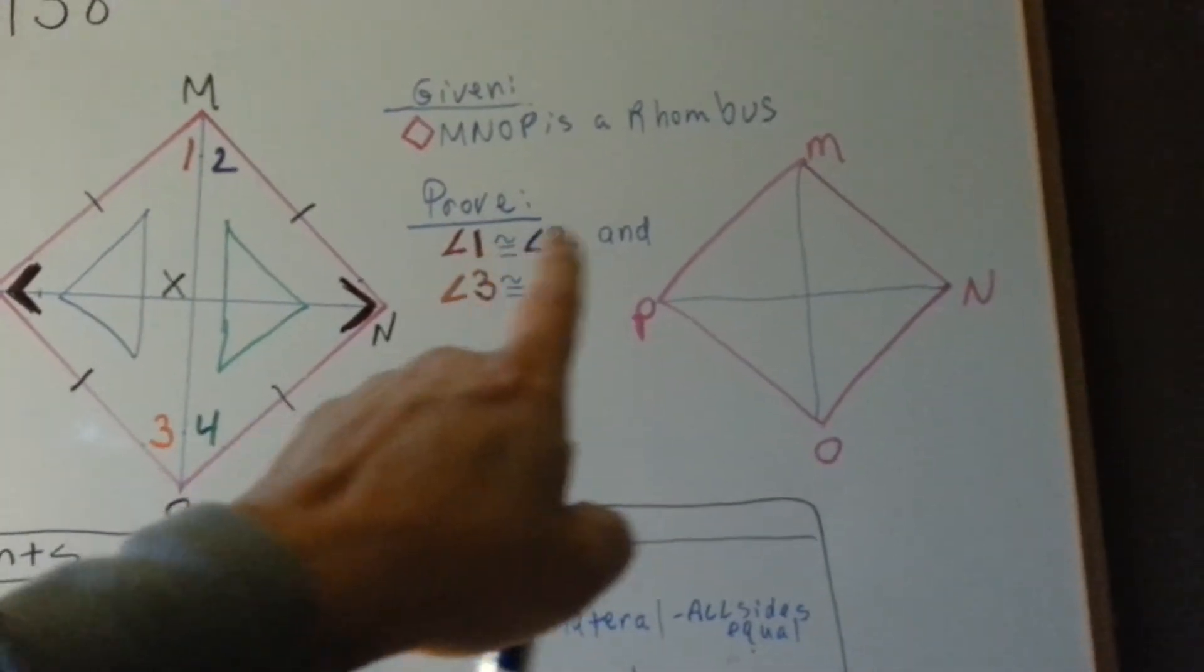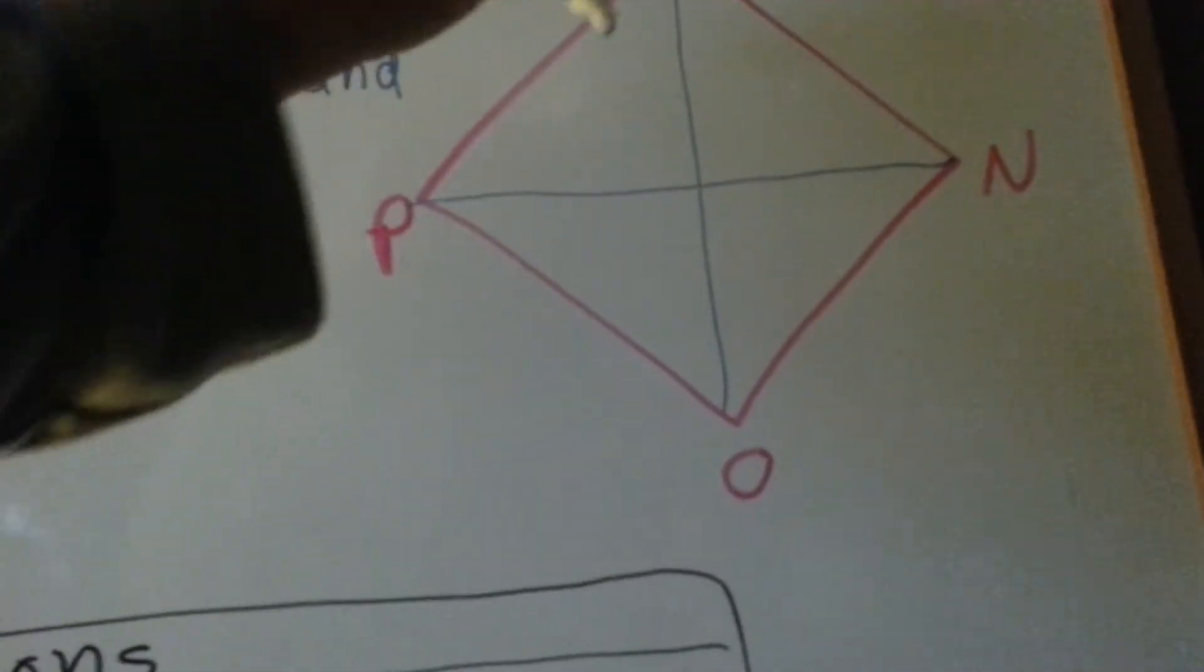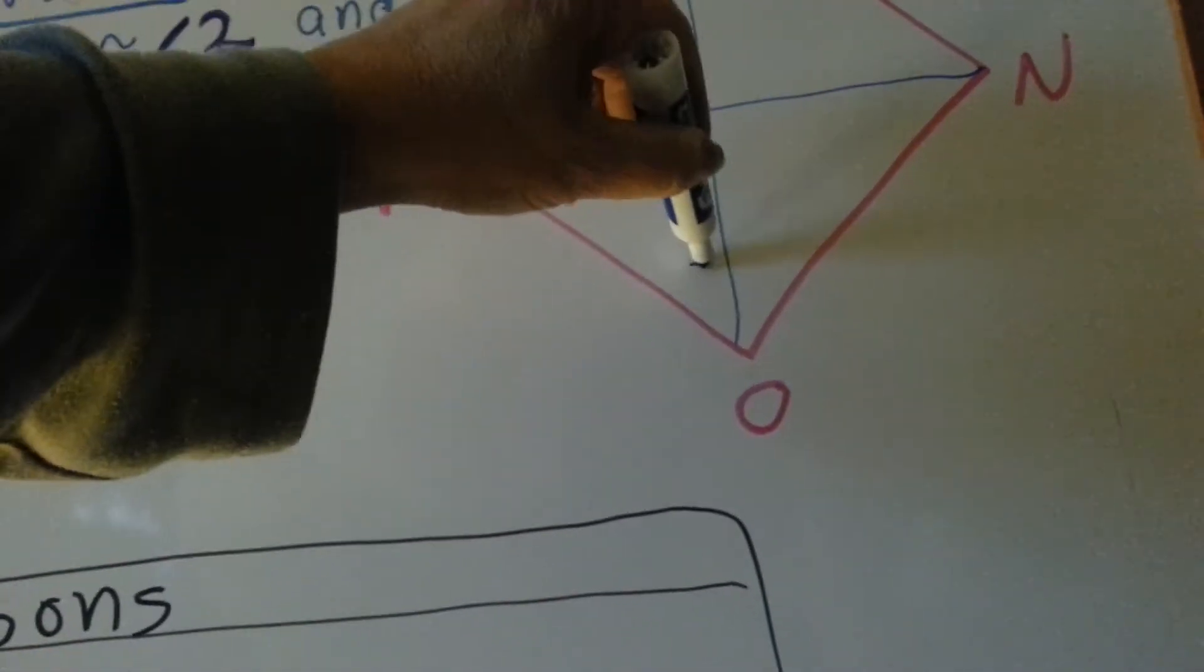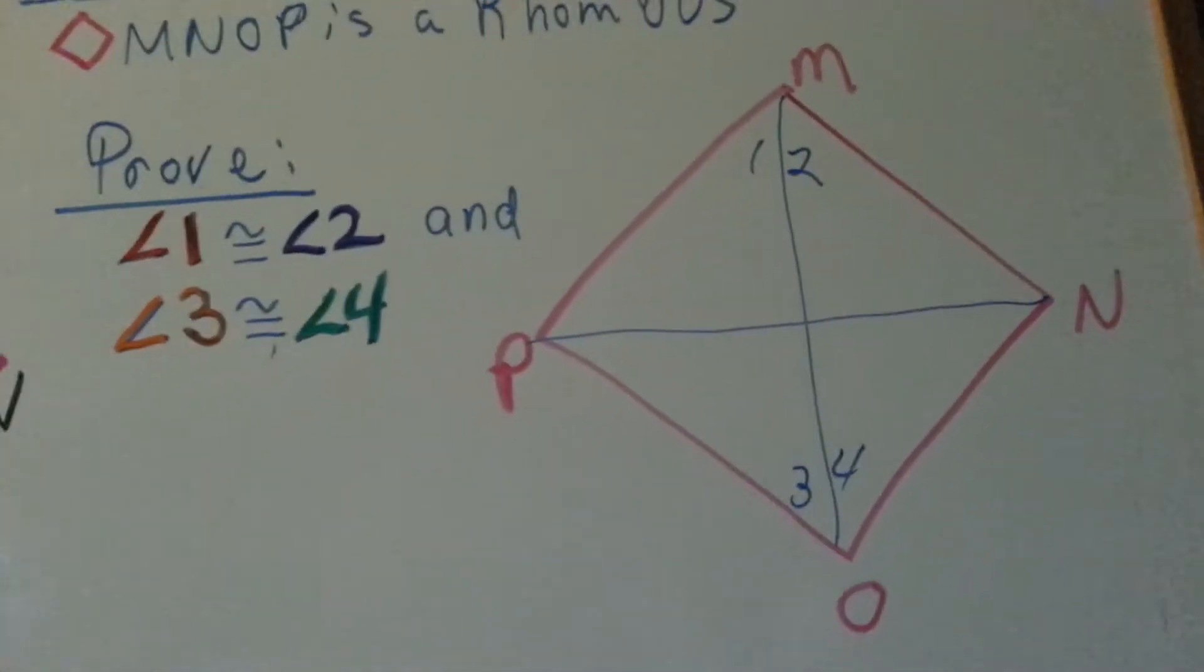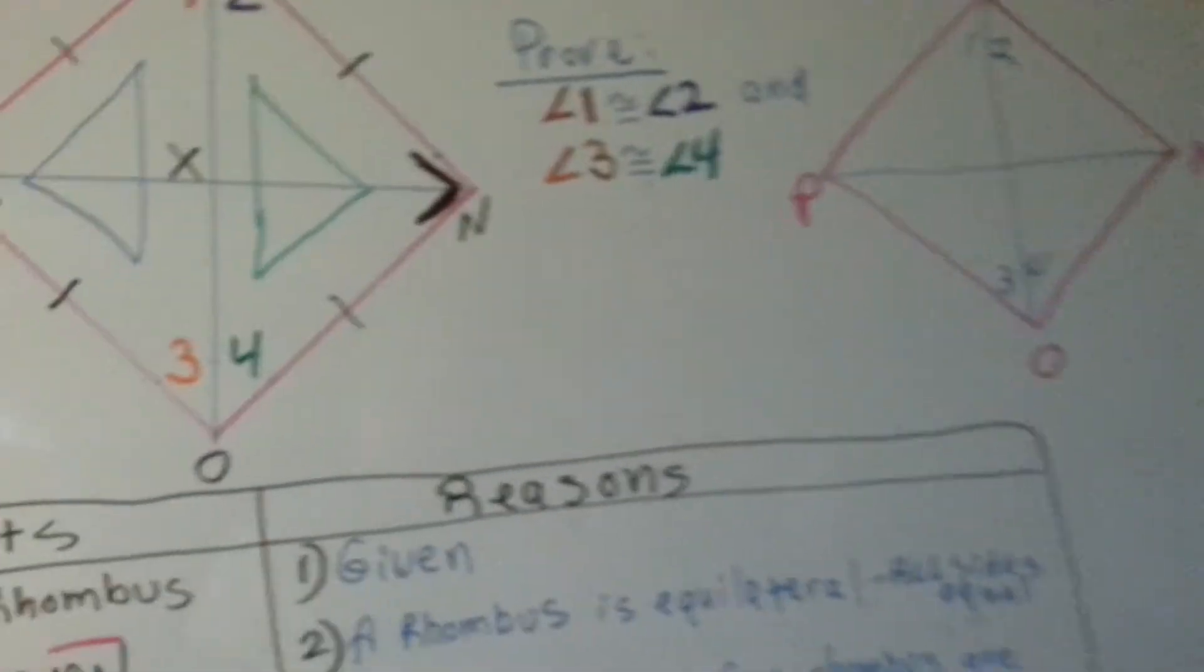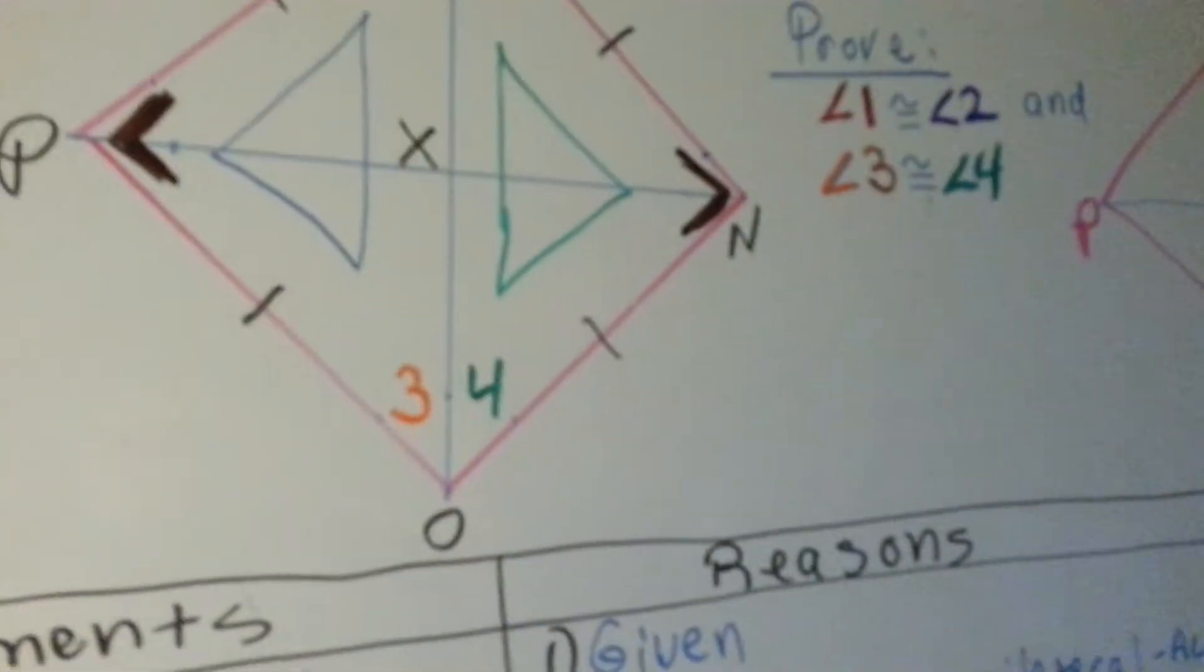From that point, now we can say that 1 and 2 are congruent to 3 and 4. We're getting there. Now we can ignore this drawing and take a look at this one.